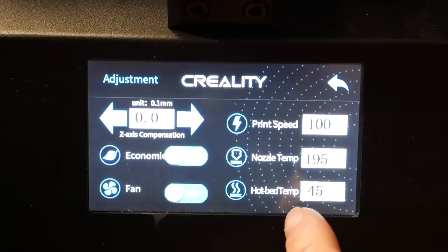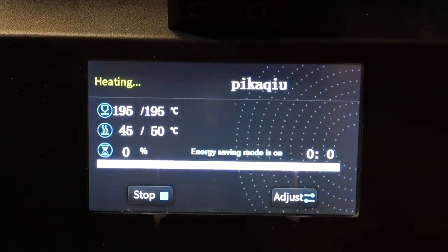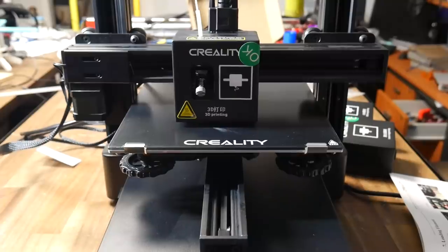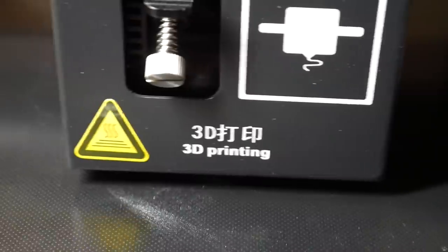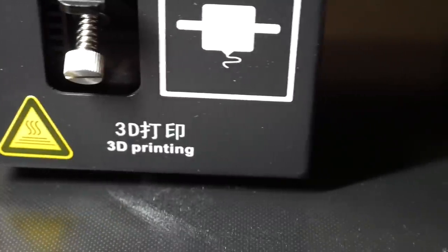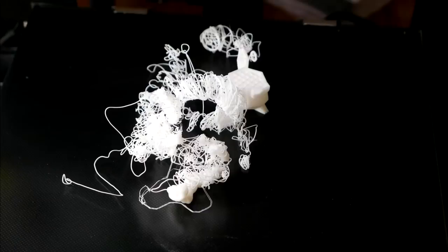The LCD lets you tweak the parameters after the print has started and gives the usual information mid-print. The form factor of that direct extruder is pretty bulky, and it makes it difficult to see how well the first layer is going down. No surprise then that my first print wasn't quite adhering properly and it came loose and failed.